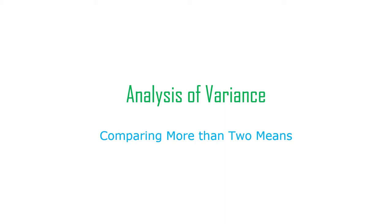An analysis of variance can be used for 3, 4, 5, 12, however many means you want, but we almost never use it for more than approximately a handful. Anything beyond that starts to seem kind of pointless — pretty cumbersome and weird, and the stats become unsatisfying, even though technically they're just fine. Anything more than two means requires analysis of variance; you can't use a t-test for that.